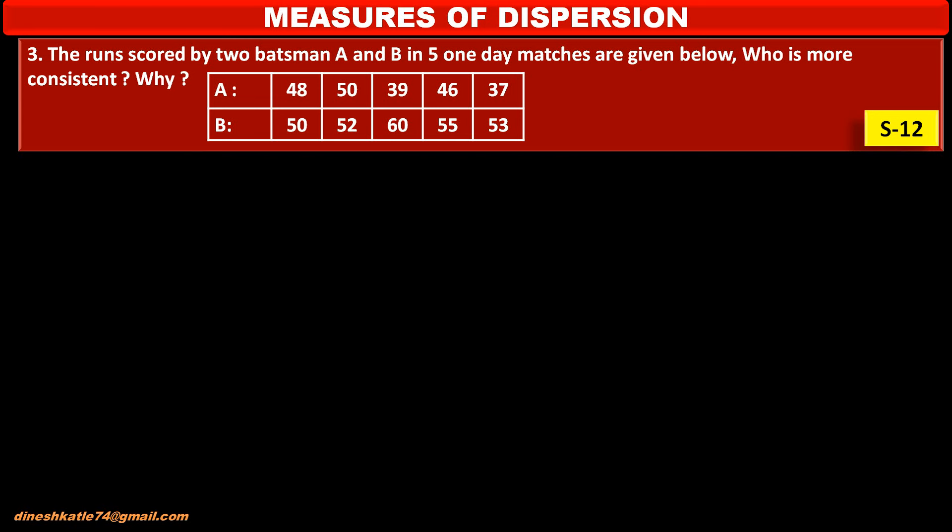The runs scored by two batsmen A and B in five one-day matches are given below. We have to find who is more consistent and why. Runs scored by batsman A are: 48, 50, 39, 46, 37. Runs scored by batsman B are: 50, 52, 60, 55, 53.